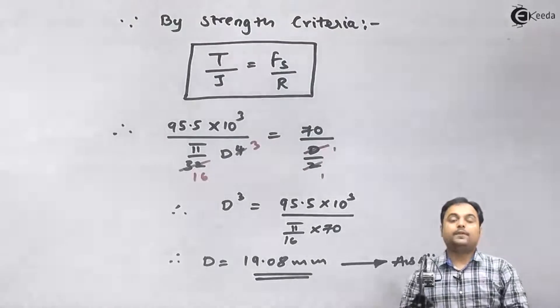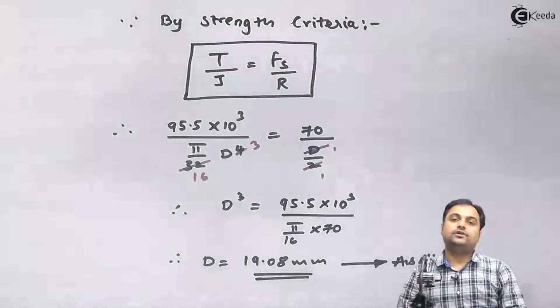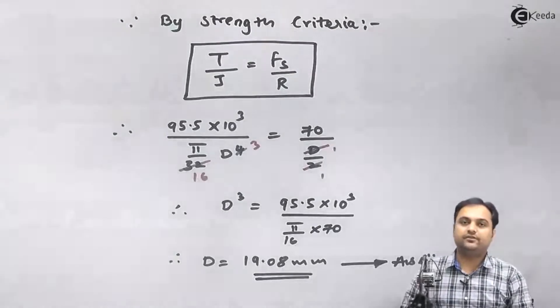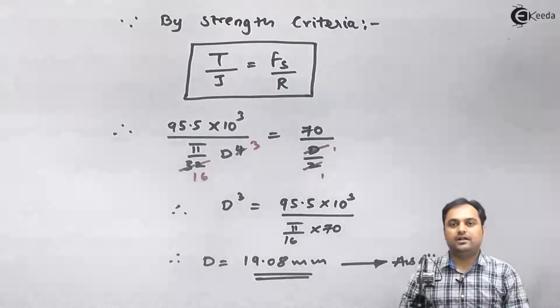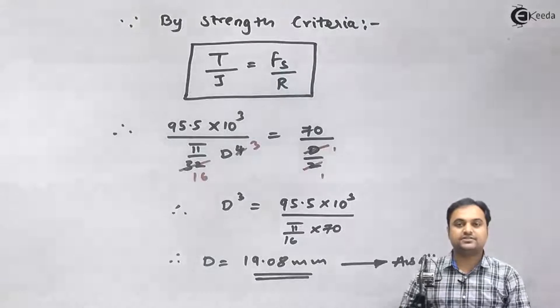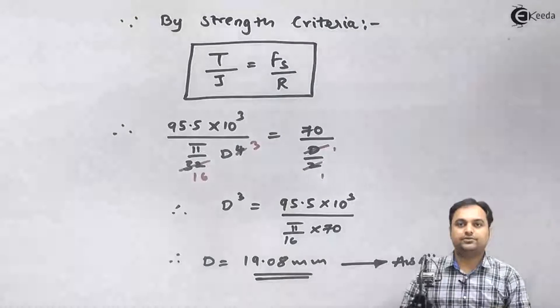So here we have calculated two different values of diameter based on two different values of rpm. With this, we complete the question.